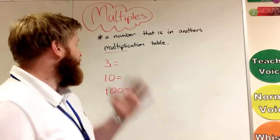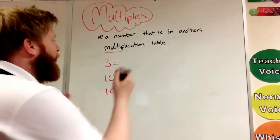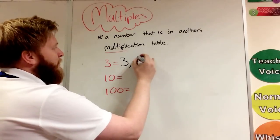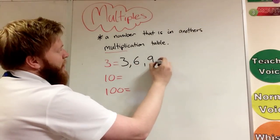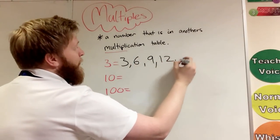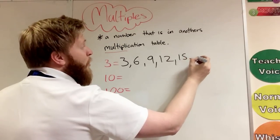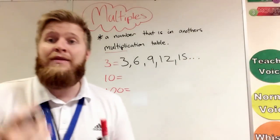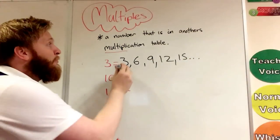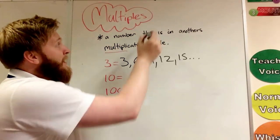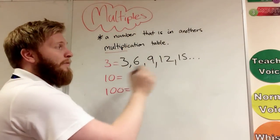So what that means is, say three. We know if we go in the three times table we go 3, 6, 9, 12, 15, and so on. Those are all in the three multiplication table, so three is a multiple of three, six is a multiple of three, nine is a multiple of three, twelve is a multiple of three, and fifteen is a multiple, and so on.